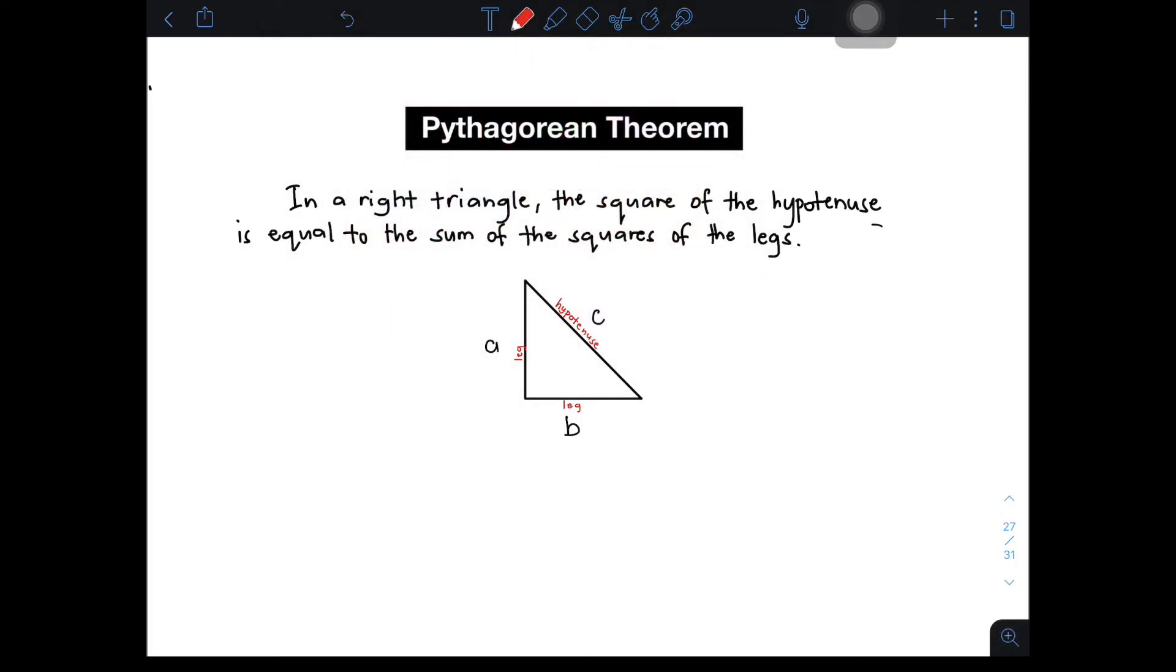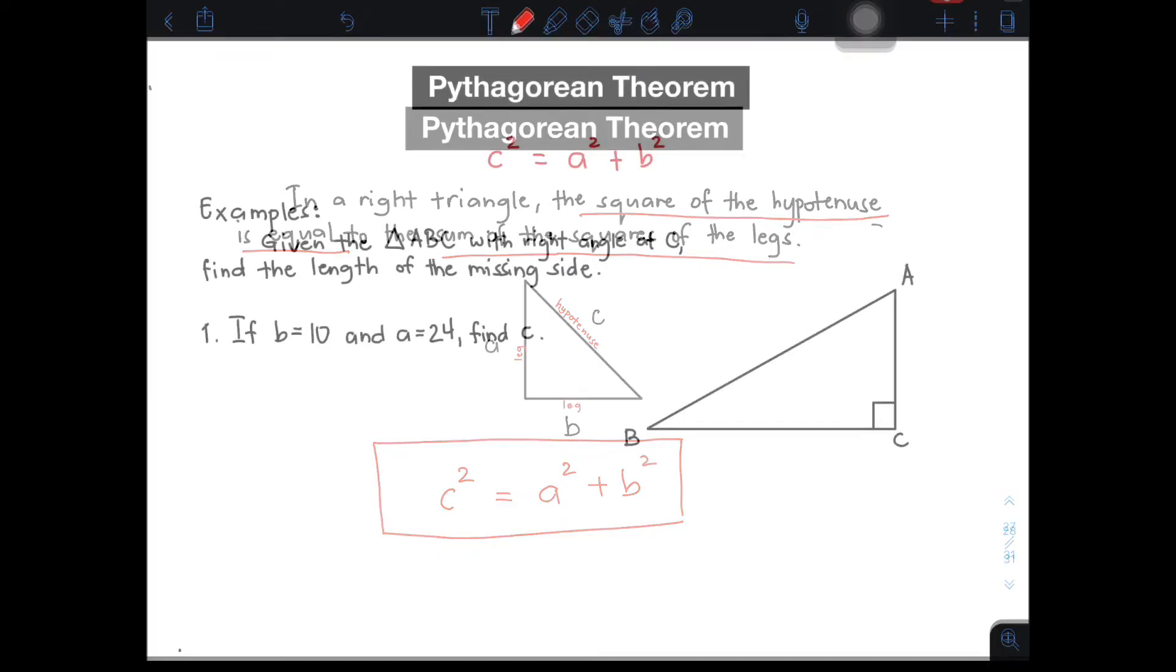The square of the hypotenuse, you will square your hypotenuse C, is equal to the sum of the squares of the legs, which is represented by A and B. So, to represent that, the sum of the square of the legs, that is A squared plus B squared. This formula, C squared is equal to A squared plus B squared, is the Pythagorean theorem itself. Ito yung gagamitin natin in solving problems later.